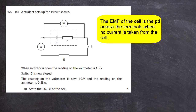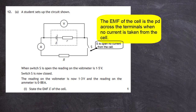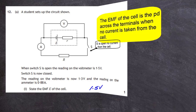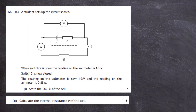When switch S is open, there is no current taken from the cell, so the voltmeter reading across the terminals of the battery indicates the EMF of the cell. In this case, the EMF is clearly 1.5 volts — that's one mark for question 12 part a1.